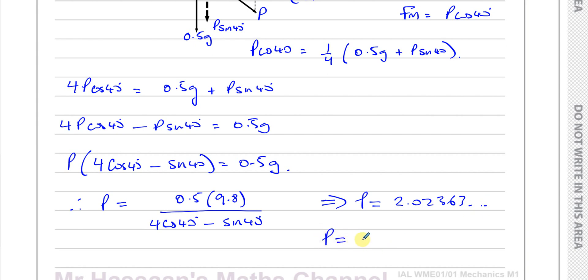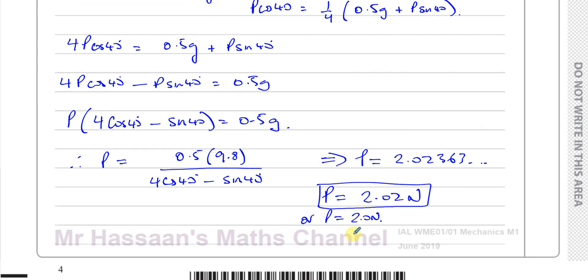So we can leave our answer to 3 significant figures if we want, 2.02 Newtons. Or if we want, we can say P equals 2.0 Newtons. I prefer to keep things in 3 significant figures always because that's always acceptable. But as we've used G as 9.8, which we're instructed to do in the question, then that's to 2 significant figures. So our final answer written to 2 significant figures is perfectly fine. We can write both of these. I prefer to keep to 3 significant figures because that's always acceptable whether we use G or not. Whereas this is only acceptable when we've used G. So just to be safe, I like to keep in the exam the answer as 3 significant figures.